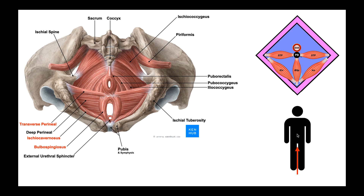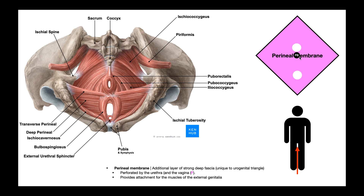Going a little bit more superior and deeper, we now reach the perineal membrane. We still have the perineal body in the center because it connects all these layers. There is a hole to accommodate the rectum, and another hole to accommodate both the urethra and, in females, the vagina as well. This hole is called the urogenital hiatus. The perineal membrane also provides an attachment for some of the muscles of the external genitalia.